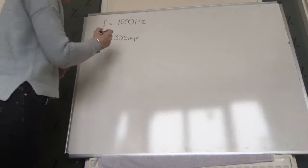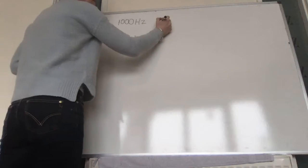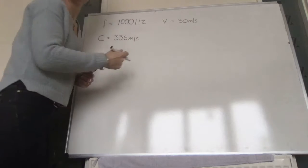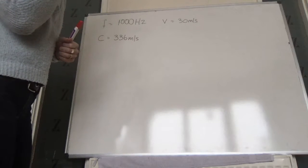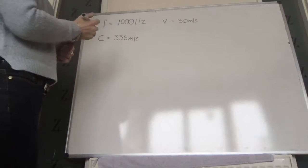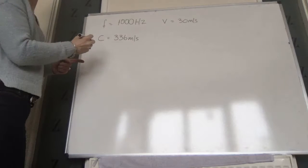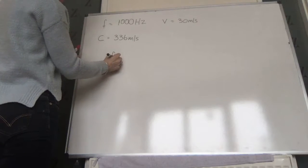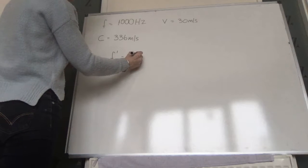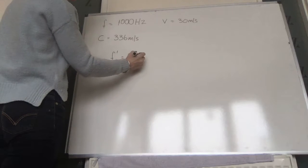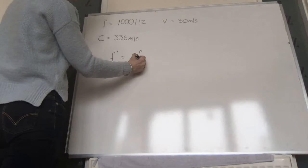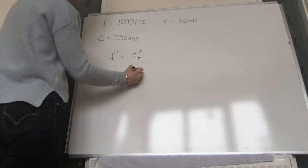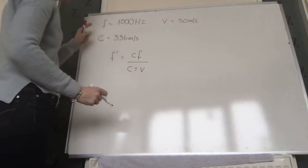The police car is travelling at a velocity of 30 metres per second. The formula is: the apparent frequency equals C, which is the speed of the wave, times F, which is the actual frequency of the sound, divided by C plus or minus V.